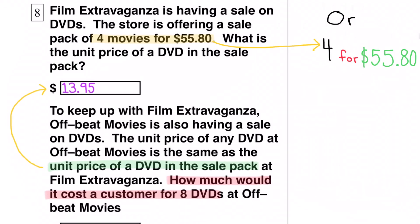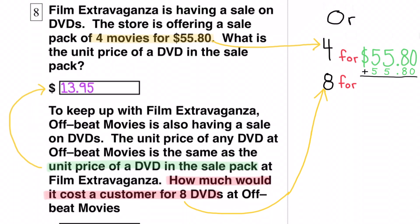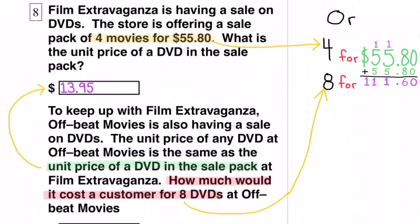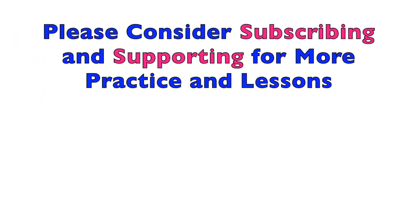You could also figure out how much the 8 DVDs cost by doubling the price for 4 DVDs. If you can buy 4 DVDs for $55.80, then you can buy 8 DVDs for double that: $55.80 times 2. $55.80 plus $55.80 equals $111.60. A customer can buy 8 DVDs at Offbeat Movies for $111.60.